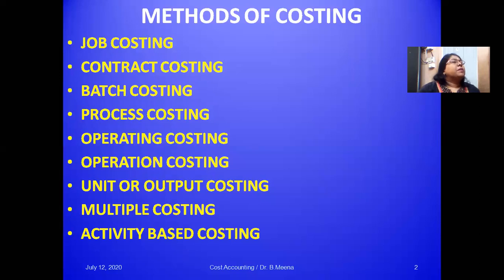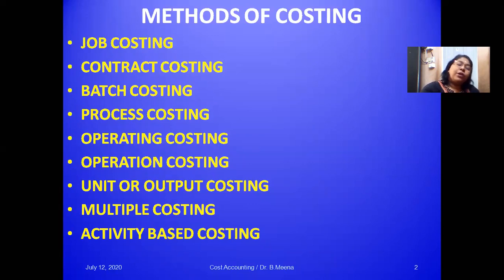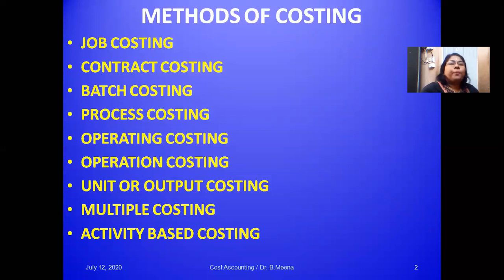The first method is job costing. Job costing is applicable in industries where goods are made against individual orders from customers. Each of the jobs involves different operations. The basic objective of this costing is to ascertain the cost of the job separately and any profit or loss thereon. So it is all based on individual orders from customers.